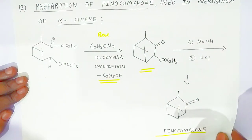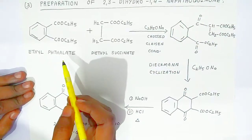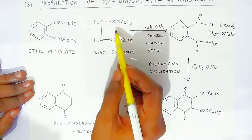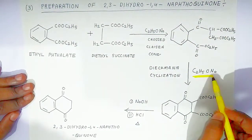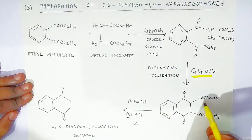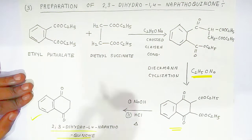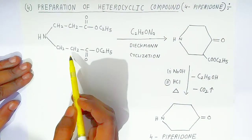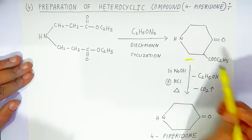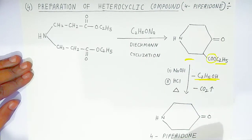The third application is preparation of 2,3-dihydro-1,4-naphthoquinone. Ethyl phthalate combines with diethyl succinate in the presence of base sodium ethoxide; cross Claisen condensation takes place to give an intermediate, then Dieckmann cyclization occurs. In the presence of NaOH and HCl on heating, 2,3-dihydro-1,4-naphthoquinone is obtained. The fourth application is preparation of the heterocyclic compound 4-piperidinone. In the presence of base, Dieckmann cyclization takes place, and on heating with NaOH and HCl there is elimination of ethyl alcohol and carbon dioxide to give 4-piperidinone.